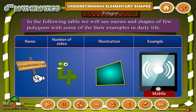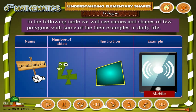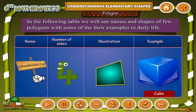Quadrilateral — number of sides is 4. Illustration, for example: Mobile, Cube.